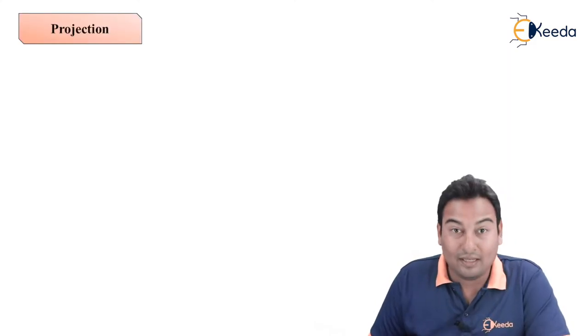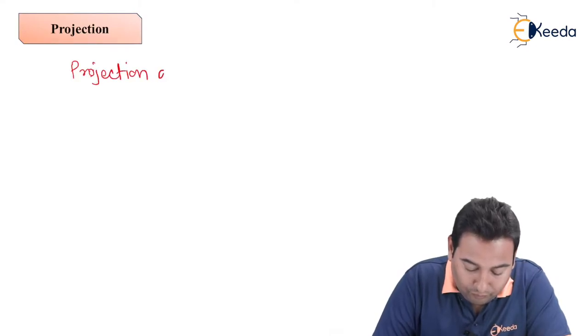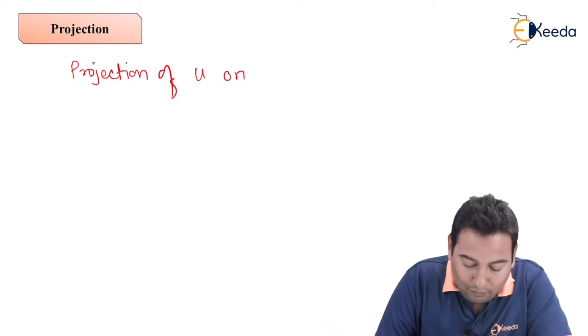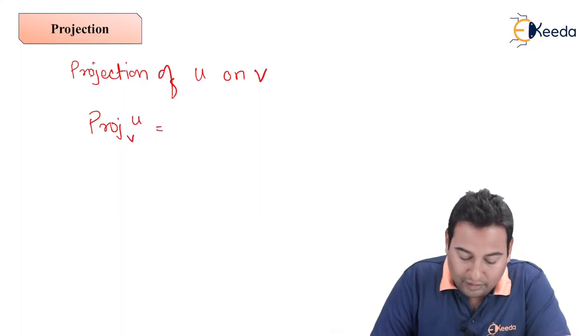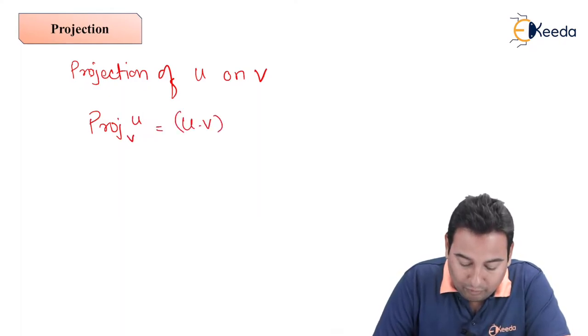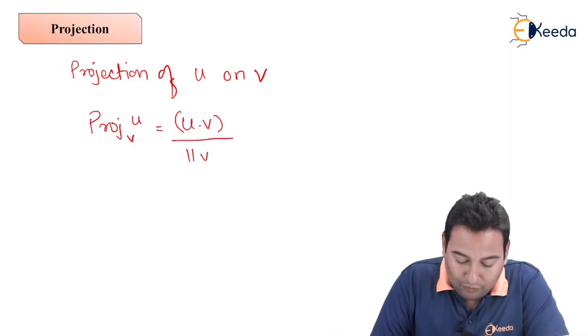First of all, see the formula. Projection of u on v is written as: projection of u on v equals u dot v divided by norm of v squared, times v.